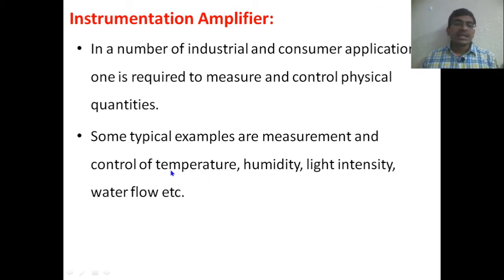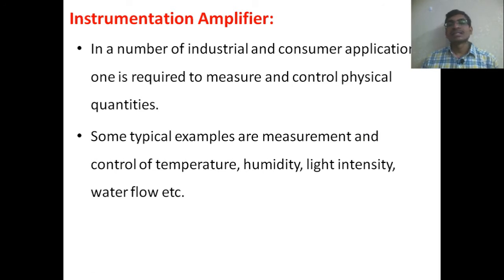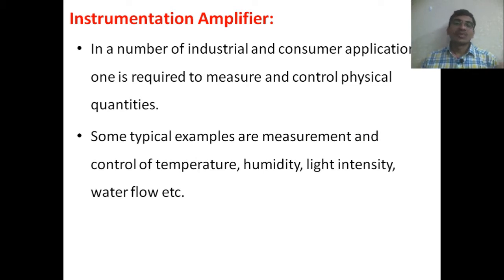For example, in an air conditioner, if you set a temperature and the room temperature equals that set temperature, the AC outdoor unit will stop working automatically — done using a temperature sensor. Similarly, for light intensity control, in our mobile phones, screen brightness automatically increases when we go outside and decreases when we come inside, using a light intensity sensor.